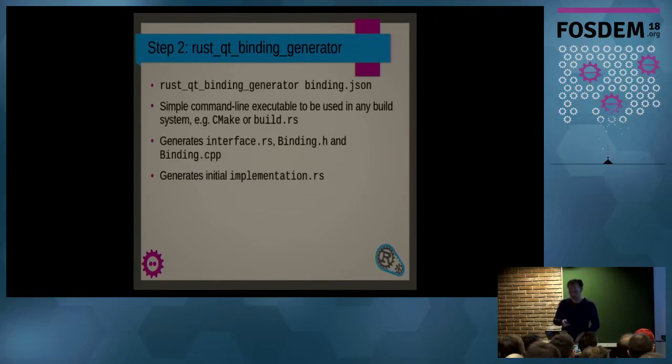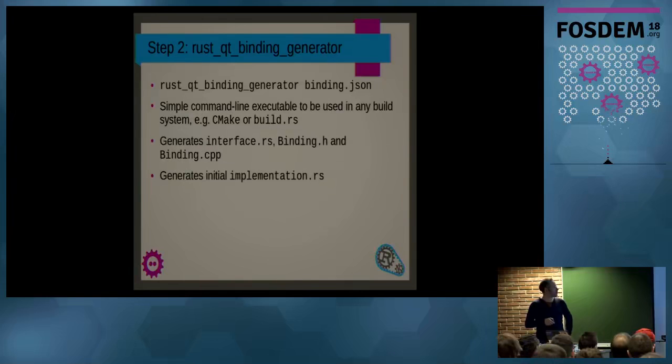That's checked off. Now, we need to run the generator. So, that's just one executable. You call it with the file. And this is set up like this, so that you can integrate it with CMake or with Cargo and build.rs. And this generates these three files that I mentioned. And then what I need to do is I need to write an implementation.rs, which is a Rust file.